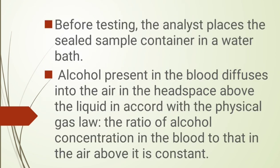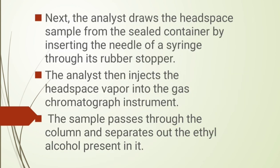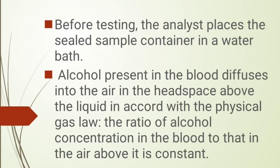Before testing, the analyst places the sealed sample in a water bath. Alcohol present in the blood diffuses into the air in the headspace above the liquid. In accord with physical gas law, the ratio of the alcohol concentration in the blood to that in the air above is constant. The analyst draws the headspace sample from the sealed container by inserting the needle of a syringe through its rubber stopper, and the diffused vapors are then analyzed using the GC.